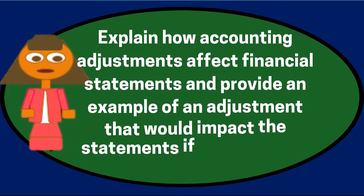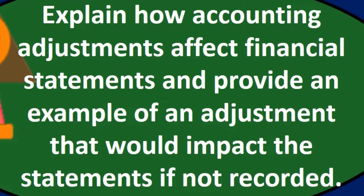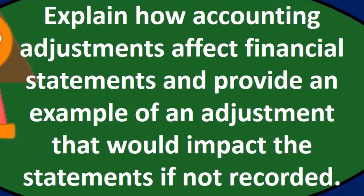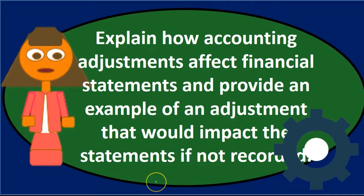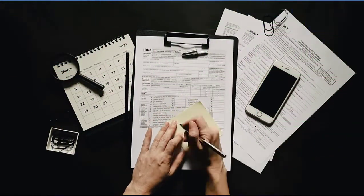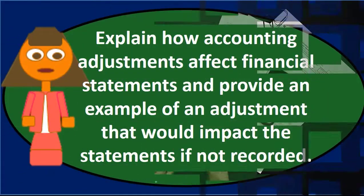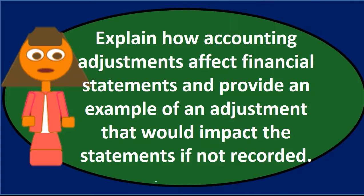In this discussion, we will explain how accounting adjustments affect financial statements and provide an example of an adjustment that would impact the statements if not recorded. This covers the adjusting process — what it is, why we do it — and the simple answer is that it affects all accounts including assets, liabilities, equity, revenue, and expenses.